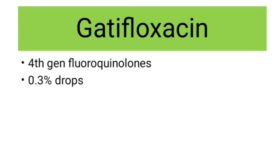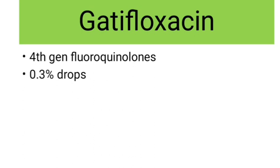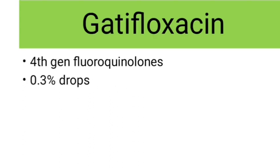Next we have the antibiotics. You should know the classification of those antibiotics. Usually gatifloxacin, moxifloxacin, or ciprofloxacin is kept, which are fluoroquinolones. The first generation fluoroquinolones includes ciprofloxacin. Second generation has ofloxacin. Third has sparfloxacin. Fourth generation includes gatifloxacin and moxifloxacin, which are used in bacterial conjunctivitis and corneal ulcers.